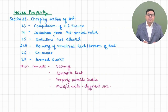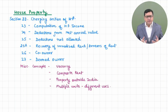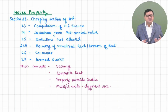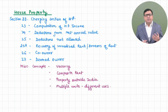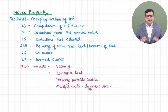Section 25 says when deductions will not be allowed. House property gives you only two deductions: one is statutory/standard deduction 24A, second is interest deduction. Section 25 will tell you when this interest will not be allowed — if you are paying interest outside India, you should deduct TDS on that interest, otherwise it will not be allowed. Or if you are not deducting TDS but the agent of that non-resident is in India, then it is fine.